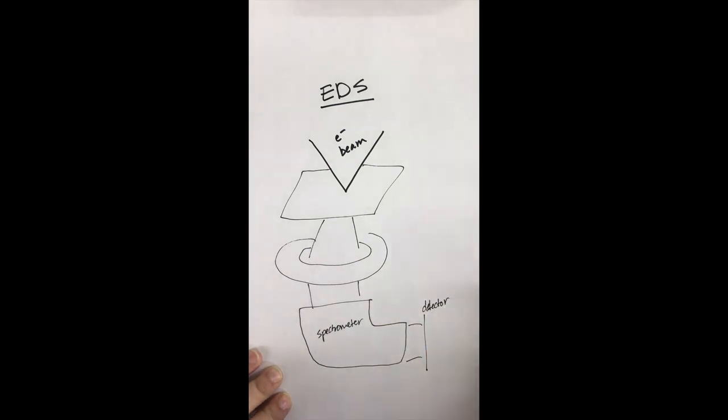EDS is better for characterization of high z elements and is bad for the characterization of low z elements. The yield of x-rays in the case of low z elements is very low due to Auger processes.